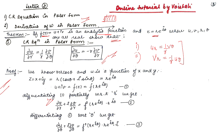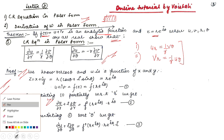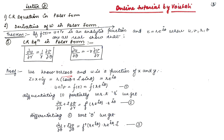Now we will see the derivation. We know X = R cos θ, Y = R sin θ, and U is a function of X and Y. So Z = X + IY = R·e^(iθ), meaning U + IV = F(R·e^(iθ)). Differentiating this first with respect to R partially, we get ∂U/∂R + I·∂V/∂R = F′(R·e^(iθ))·e^(iθ).